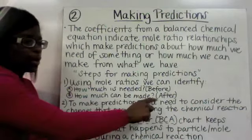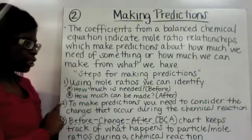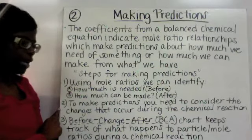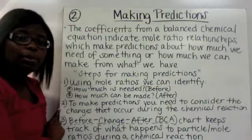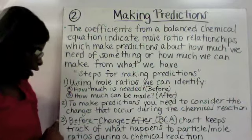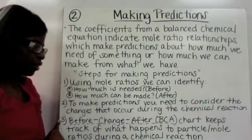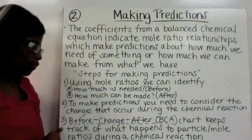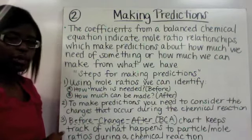How much can be made — that's what we're going to call the after. Step two: to make these predictions, you're going to need to consider the changes that occur during the chemical reactions. You can think about what types of chemical reactions are taking place, and that can help you figure out what kind of changes are occurring. Then step three, you're going to use the before-change-after, which is known as the BCA chart, to keep track of what's happening to the particles or the mole ratios during a chemical reaction.